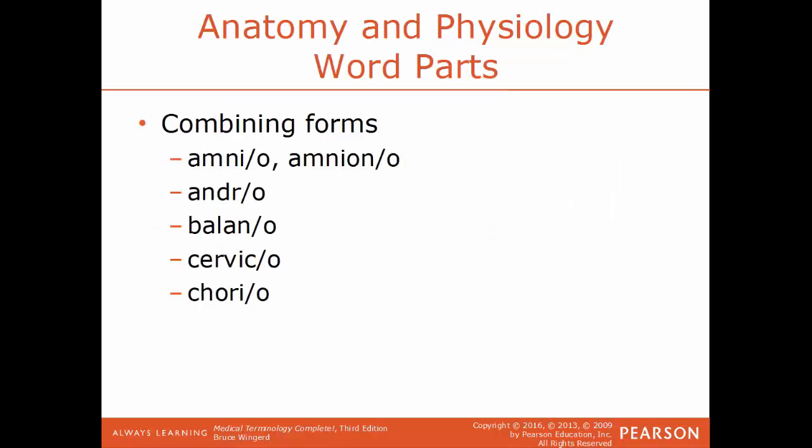We'll start off with some anatomy, physiology, and some word parts and common combining forms. Amnio or amniano is a reference to the amniotic sac, the sac that surrounds the developing embryo. Andro is a reference to male. Bilano is a reference to the glans penis, or the head of the penis.